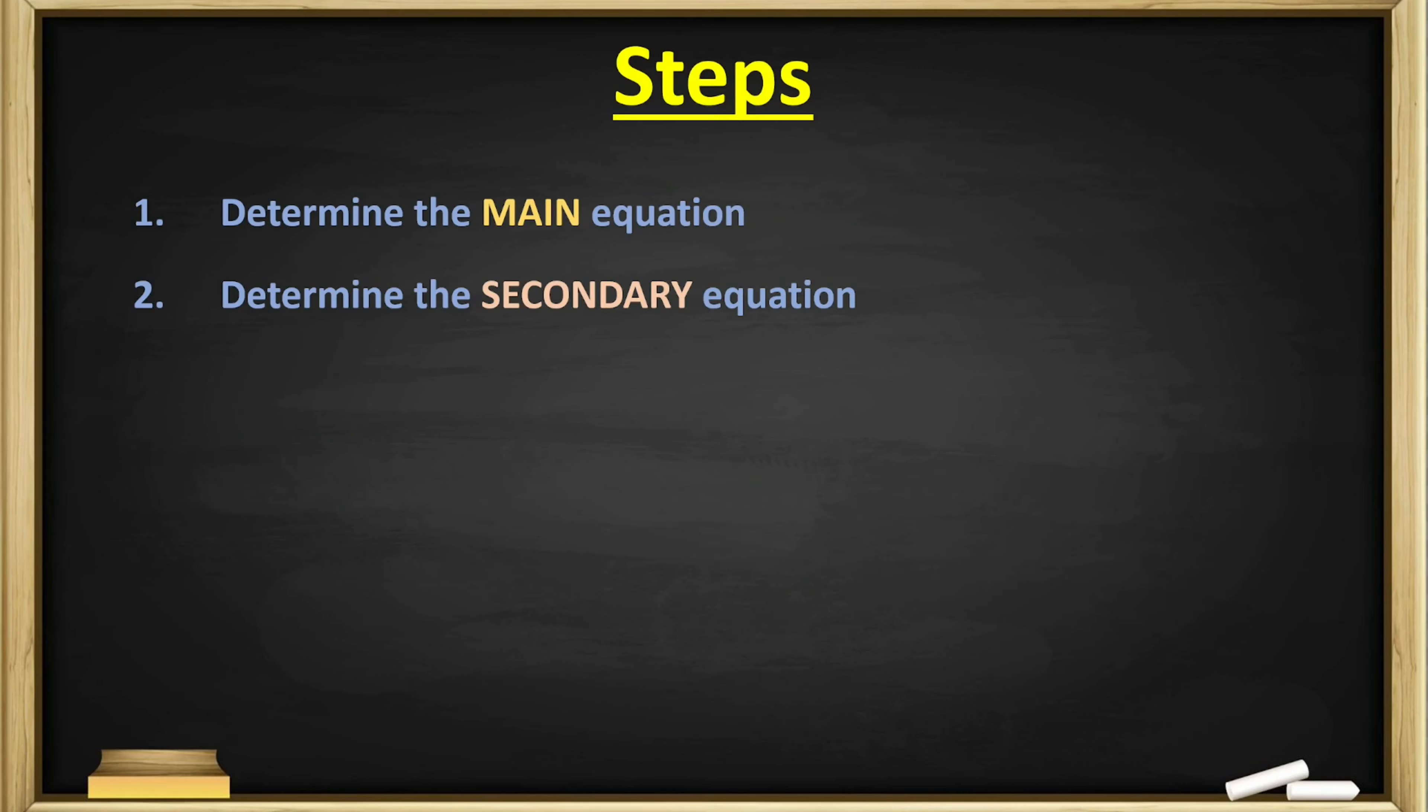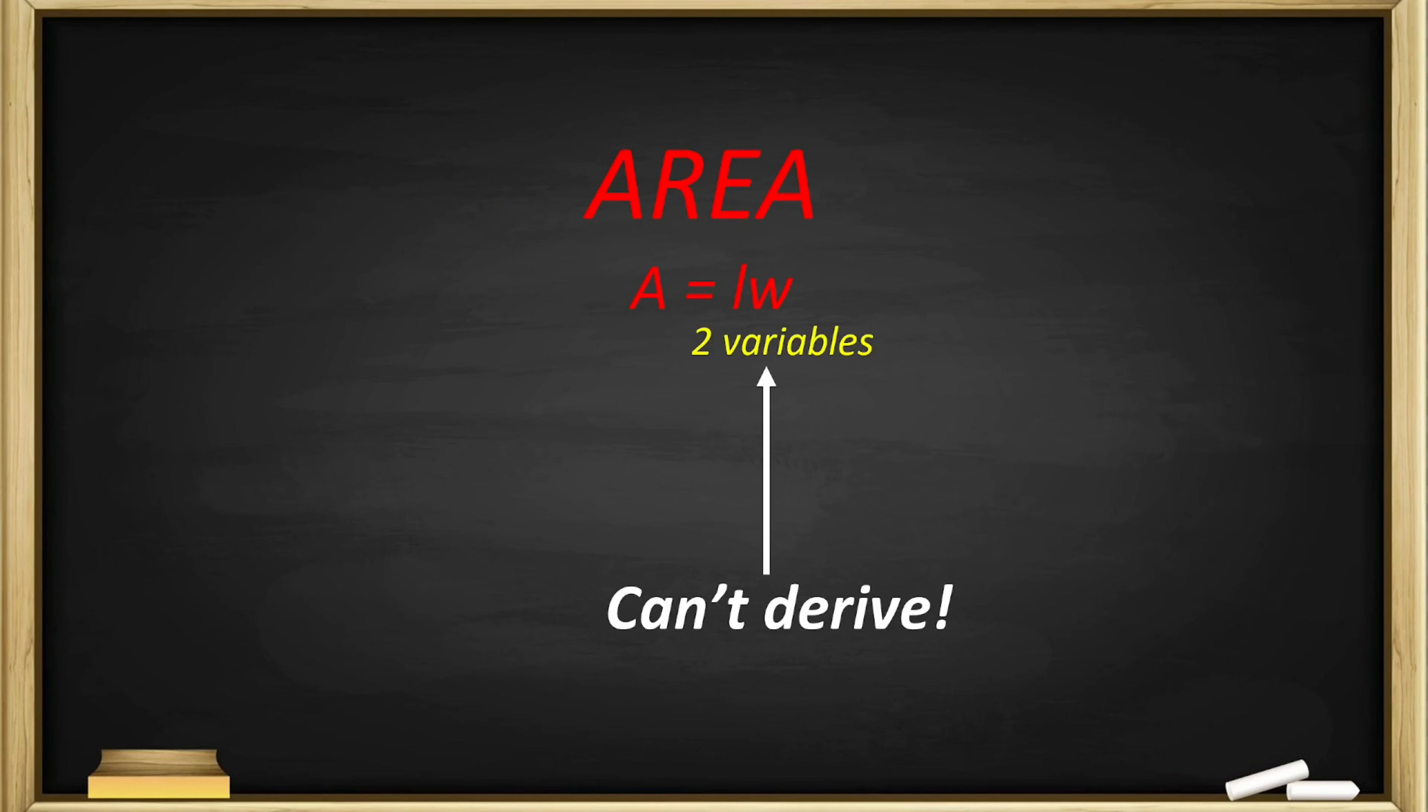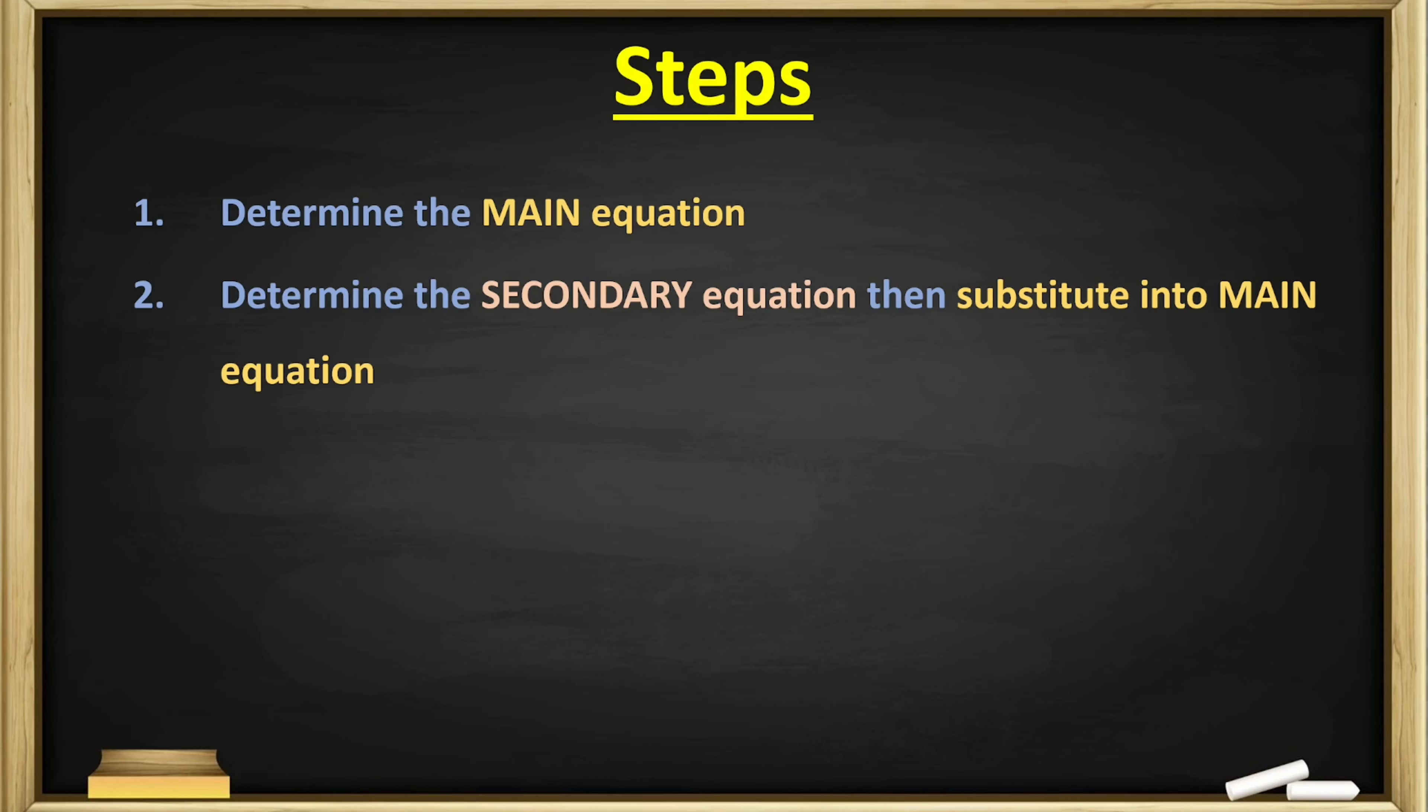Once you have your main equation, you have to find a secondary equation, and that's usually the trickiest part. Why do we need a secondary equation? Well, because our main equation has two variables, but we can't derive two variables. So they have to give us some other information that relates one variable to the other, and then we can isolate for one of the variables and substitute it into the main equation so that we can do calculus afterwards.